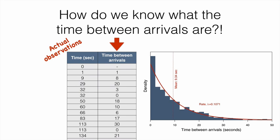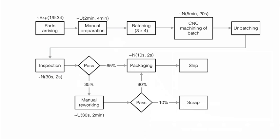Throughout this assembly line there are different distributions we can observe. We're going to assume parts arrive at an approximated rate of 1 divided by 9.34 — that will be the parameter for the exponential distribution. The manual preparation is quite lengthy; it follows a uniform distribution anywhere between two minutes and four minutes. The batching, machining, and unbatching we estimate as following a normal distribution with mean five minutes and standard deviation of 20 seconds. The inspection we assume takes a normal distribution with a mean of 30 seconds and standard deviation of two seconds.